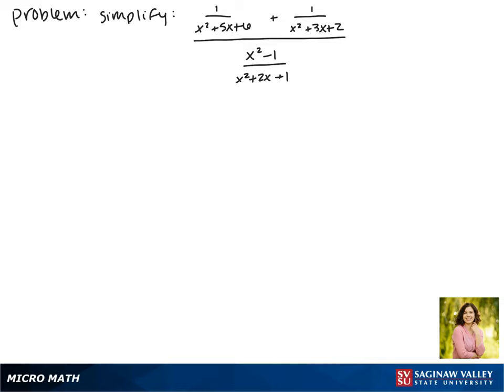Today we'll be simplifying the expression 1 over x squared plus 5x plus 6 plus 1 over x squared plus 3x plus 2 divided by x squared minus 1 over x squared plus 2x plus 1.